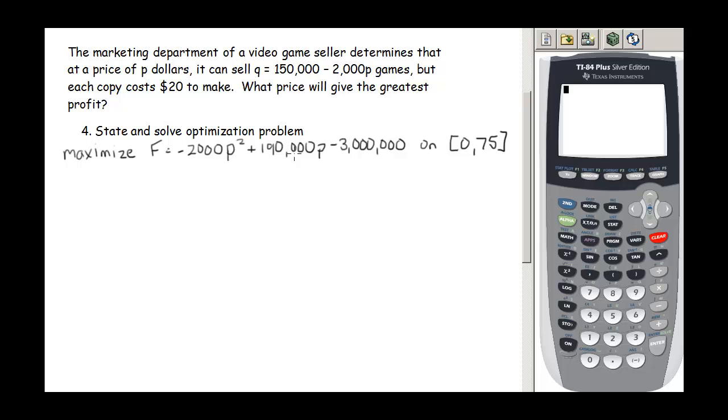And my profit function we found in the previous part is this function right here, and we're trying to do this on the interval 0 to 75. So this is the values of P that make sense. So let's go back and use our techniques from the previous section. So the first thing we're going to do is we're going to find those stationary points, and remember those occur where your derivative equals 0.